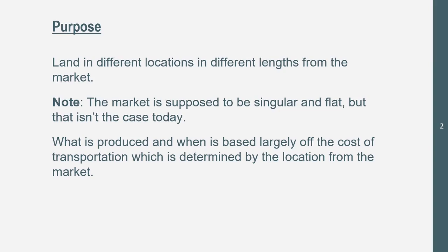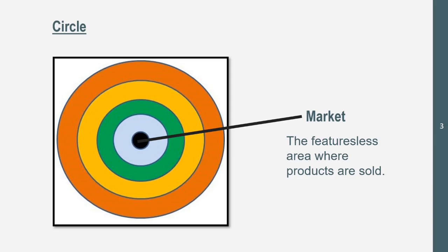What is produced and when is produced is based largely on the cost of transportation, which is determined by the location from the market. So the farther away something is going to be, the more expensive transportation is going to cost.